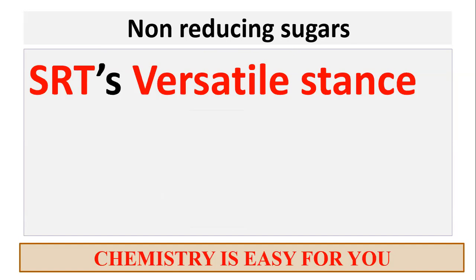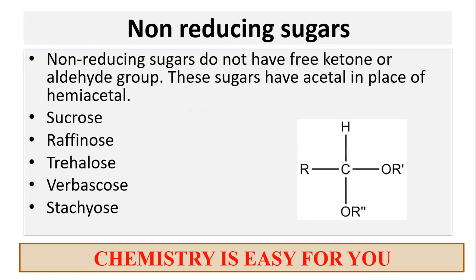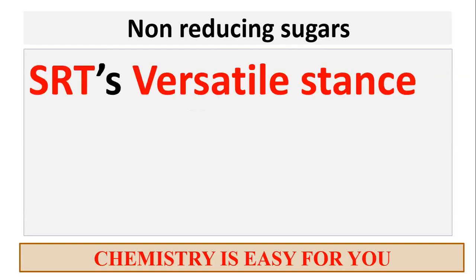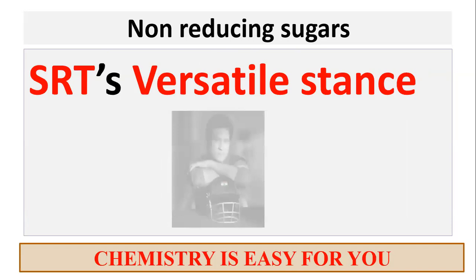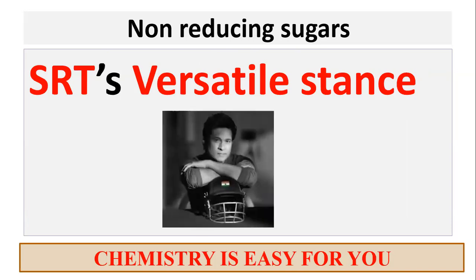S stands for sucrose, R for raffinose, T for trehalose, versatile for verbascose, and stance stands for stachyose. That is the memory hack to memorize the names of the non-reducing sugars. Repeat this sentence and write down the names below the sentence — it will definitely stay in your memory for a very long time.